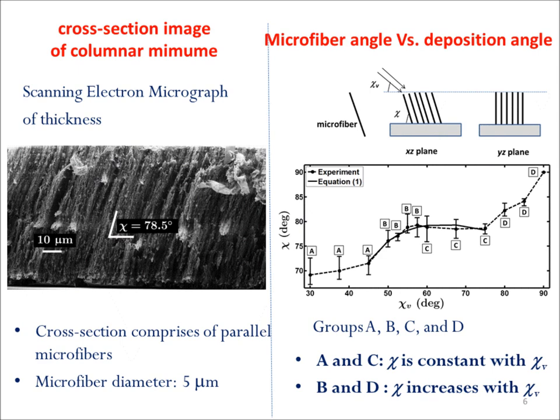A typical cross-section image of a columnar MIMUM is shown in the first figure. The cross-section of each MIMUM comprises microfibers of diameter 5 micrometers arranged in parallel. Next, we check the variation of microfiber inclination chi with the deposition angle chi-v. We observe four distinct regimes in the chi versus chi-v plot, classified into groups A, B, C, and D. In groups A and C, chi remains approximately constant with chi-v, whereas in groups B and D, chi increases with chi-v.